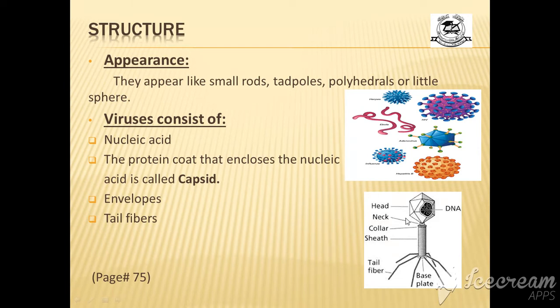About the capsid, one more point: capsid may be of different shapes. Capsid is made up of protein subunits called capsomers. The smallest viruses have only four genes, and the largest viruses have up to 200 genes. So this is the structure of a virus.